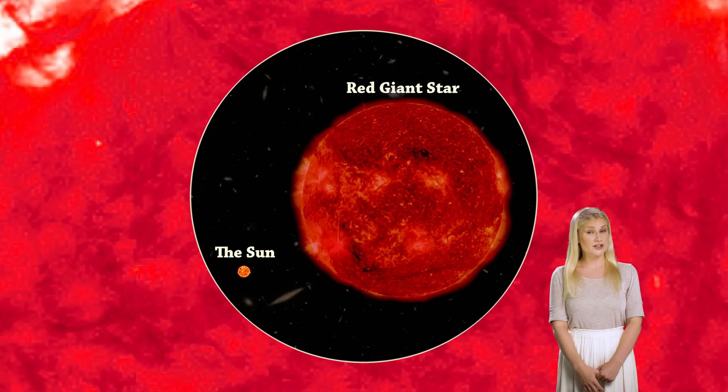This will heat up a layer surrounding the core and hydrogen will start to fuse in a shell. In this process the outer layer of the Sun will expand by a hundred times in size and form what we call a red giant star.